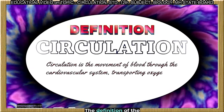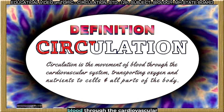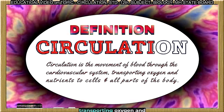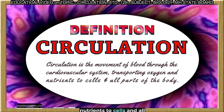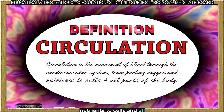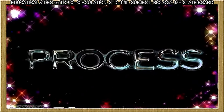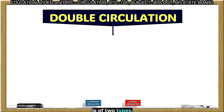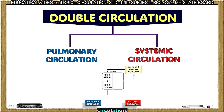The definition of circulation is the movement of blood through the cardiovascular system, transporting oxygen and nutrients to cells and all parts of the body. Basically, circulation in human beings is of two types: one is pulmonary circulation and another is systemic circulation.